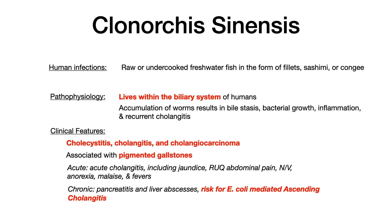Clonorchis sinensis is also associated with pigmented gallstones. Acutely, you may see cholangitis, jaundice, right upper quadrant abdominal pain, nausea, vomiting, anorexia, malaise, and fevers. More chronically, it is associated with pancreatitis and liver abscesses. Increasingly high yield on exams: clonorchis sinensis increases the risk for E. coli-mediated ascending cholangitis. So not only can it cause cholangitis directly, but the infection also increases the risk for a secondary E. coli-mediated ascending cholangitis infection.